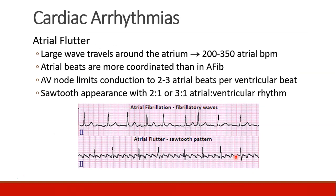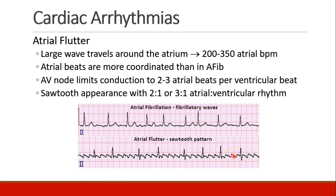Atrial flutter is related to atrial fibrillation. It's a large wave that travels quickly around the atrium at about 200 to 350 beats per minute — more coordinated than AFib. AFib shows a noisy baseline with no P waves and QRSs appearing irregularly, whereas atrial flutter is much more regular, with a sawtooth pattern and a certain number of atrial beats conducted to the ventricles. Often these patients have a heart rate around 150 beats per minute, with a two-to-one or three-to-one conduction ratio between the atria and ventricles.